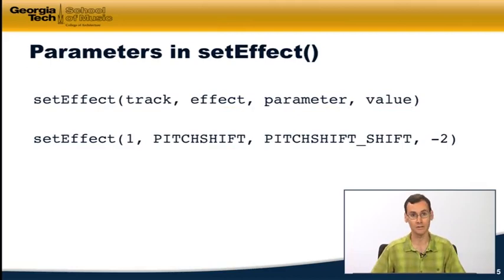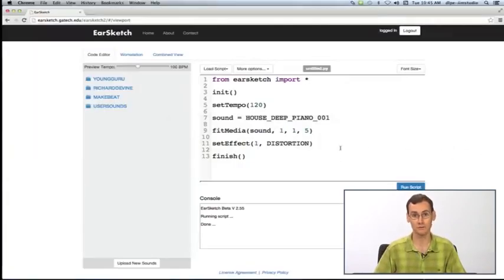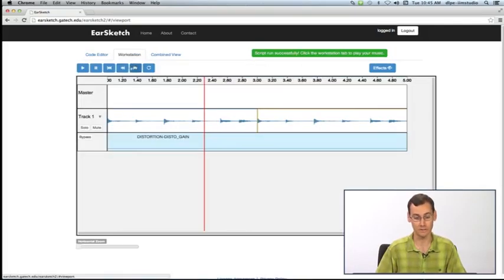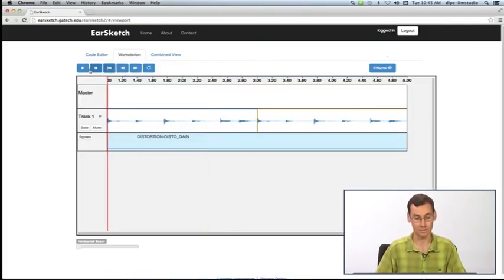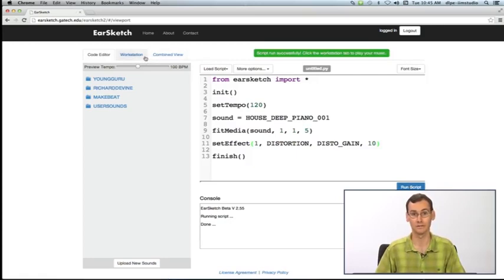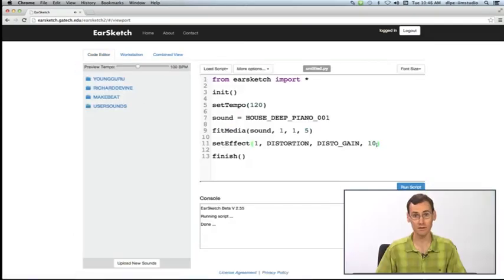So I can do this in our script. I'll start with distortion here. The parameter I actually want to use for that is DISTO_GAIN. And then the amount of distortion, let's say that I want to make it less, I'll make it just five, and we can see how that sounds. Come back here to our workstation view, and you can see that that bar is a lot lower than it was when we did it with the default value. Maybe that's too low, maybe I want to increase it to ten. So I can do that as well. Run that again, you can see it's a little higher now.